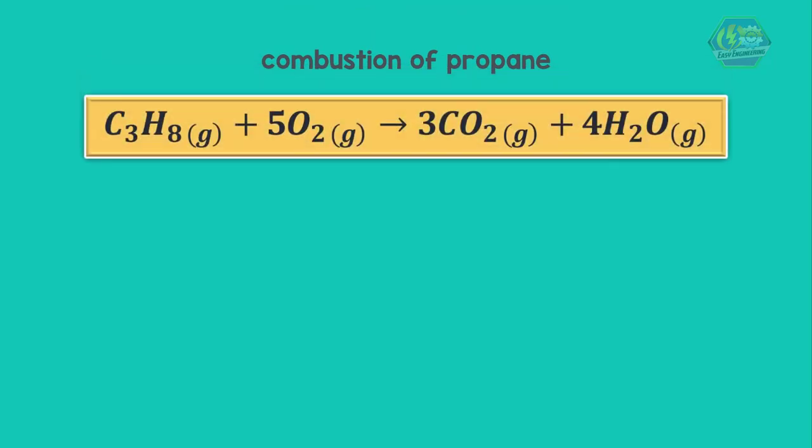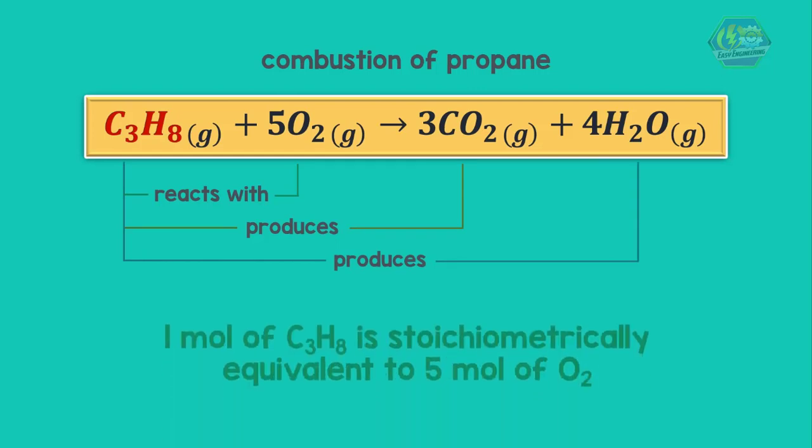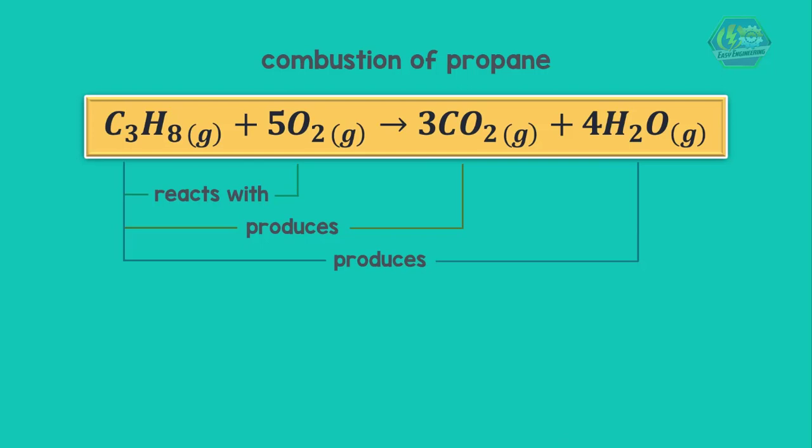For example, let us consider the combustion of propane. If we view the reaction quantitatively in terms of moles, we notice that the coefficients provide molar ratios. Hence, in this reaction we can say that one mole of propane reacts with five moles of oxygen to produce three moles of carbon dioxide and four moles of water.